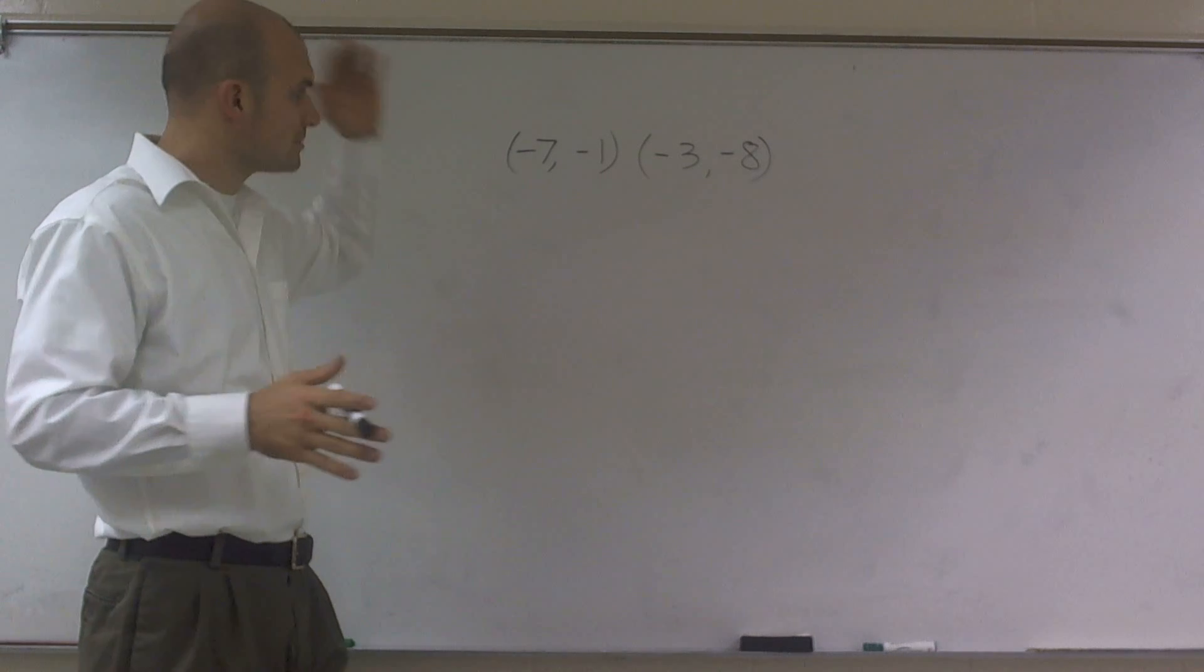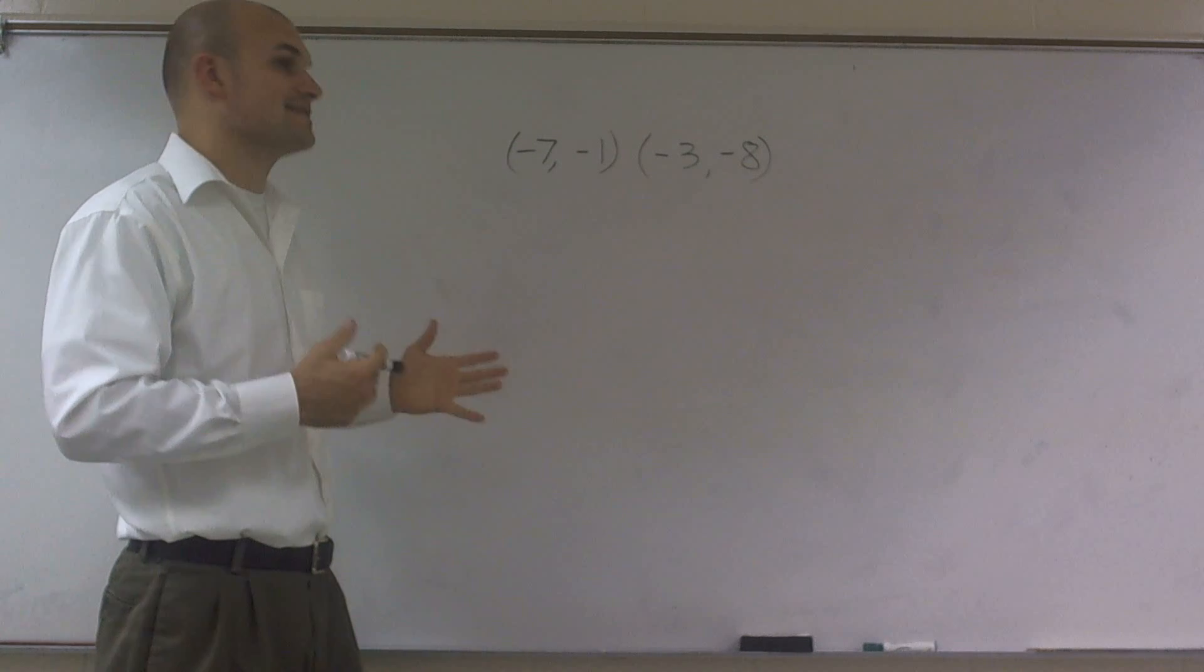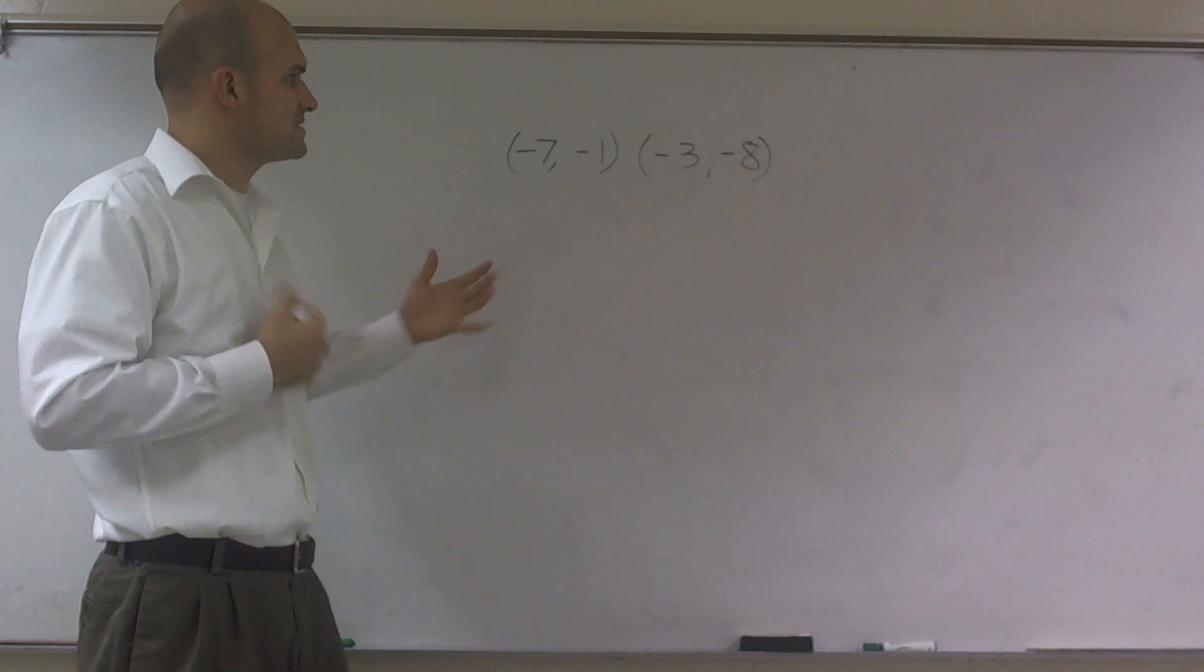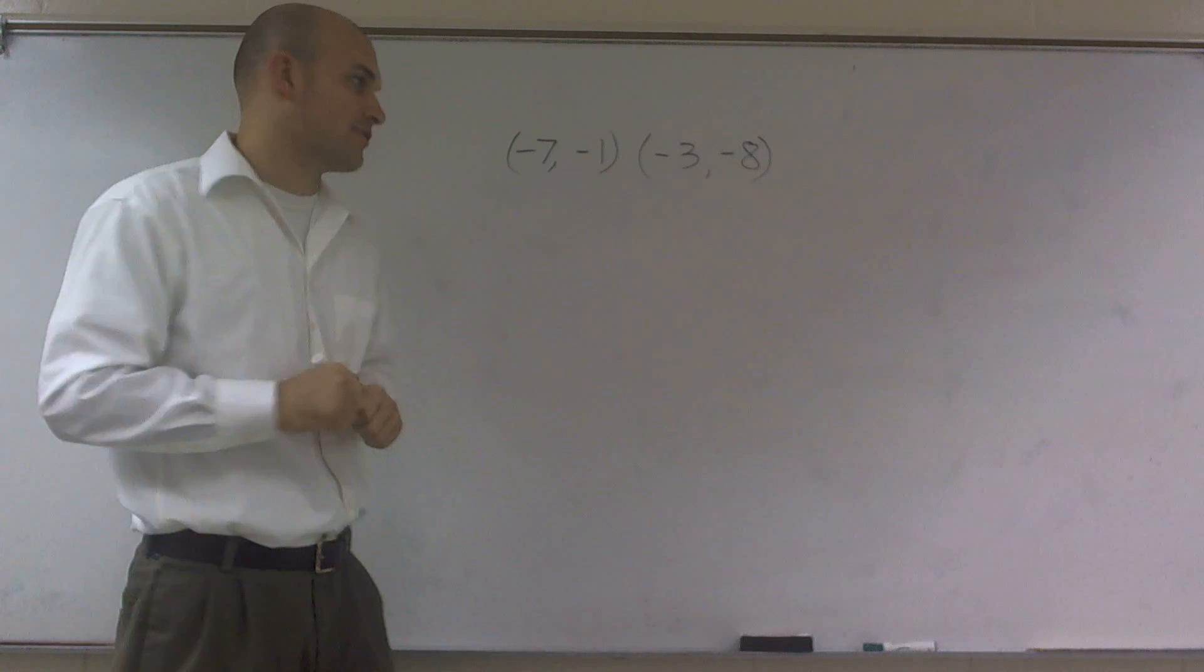OK, the easiest way to solve this problem is we need to find a linear equation that has these two points in there. So the easiest way to solve this problem is what we like to call the point slope form.